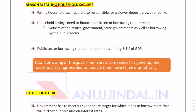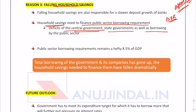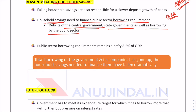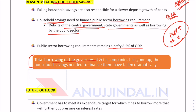The third reason is falling household savings. Household savings constitute the deposits, so a fall in household savings leads to a fall in deposits too. These deposits — or household savings — need to finance the Public Sector Borrowing Requirement (PSBR), which is the deficit of the central government, state governments, as well as borrowings by the public sector. The PSBR is increasing while household savings are falling, and public sector borrowing requirements remain hefty at 8.5 percent of GDP.